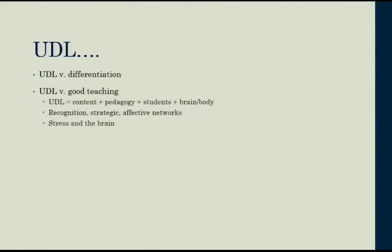UDL recognizes the networks in the brain. The recognition network deals with the content - the what of knowing, what you're learning. The strategic network deals with how you're going to use that information - the how of learning. And the affective network deals with your interests and dispositions - the why you want to learn it. All of those have to be engaged at once. You have to be able to access the content, know how you need to work with it, and know why it's important to learn it. Once those things are engaged, learning is going to occur.